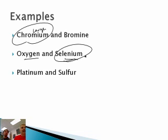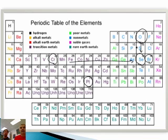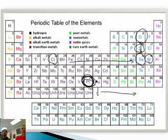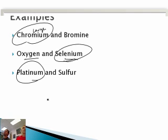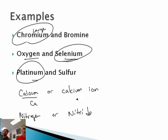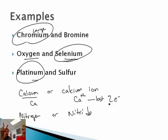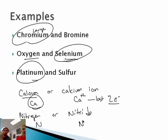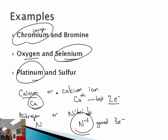Platinum versus sulfur: platinum is here and sulfur is here. Going to the right they get smaller, and going up they also get smaller — so sulfur is obviously smaller, meaning platinum is our bigger one. Now, calcium or calcium ion Ca2+? The plus 2 means it lost two electrons — babysitters outnumber kids — so the calcium ion is smaller and calcium is bigger. Finally, nitrogen versus nitride N3−: negative 3 means it gained three electrons, so the kids outnumber the babysitters. The nitride is bigger than nitrogen.